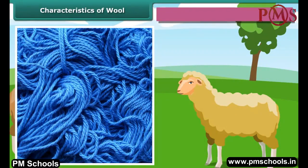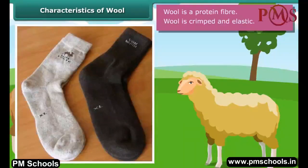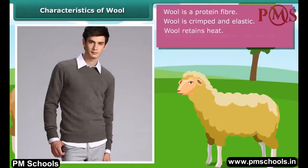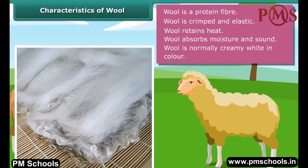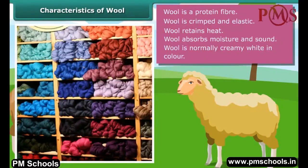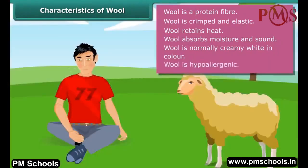Wool is a protein fiber. It is crimped and elastic. Crimp makes wool bulky and helps it retain heat. Wool absorbs moisture and sound because it is hollow. Wool is normally creamy white in color, but it can also be black, brown, or silver. Wool is hypoallergenic — in other words, it causes fewer allergies in human beings.